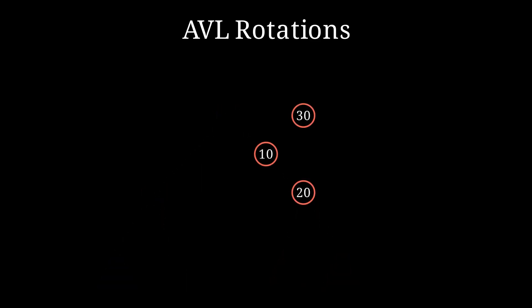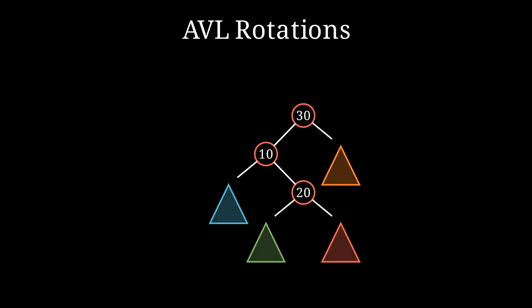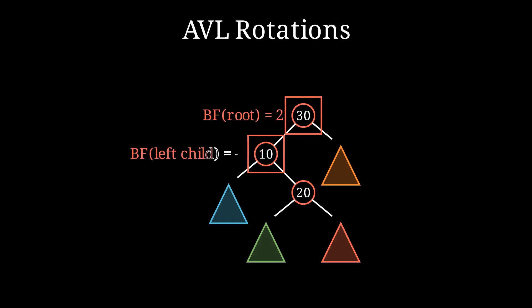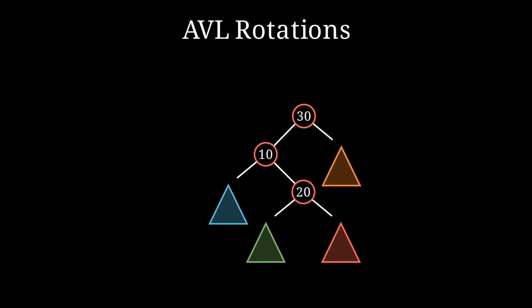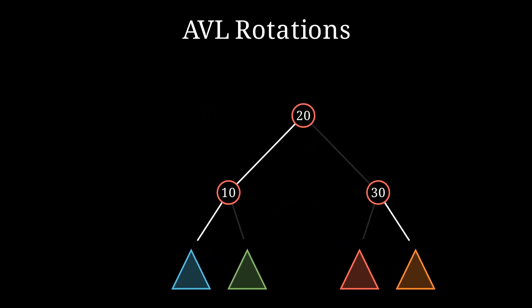The fourth type of rotation is a left-right rotation. It is used when the tree configuration is as shown. Here, the root has balance factor 2, and the balance factor of the left child is negative 1, which triggers a left-right rotation. We rotate such that node 20 is brought up to be the new root — node 30 becomes its right child, and node 10 becomes its left child. The pointers to the subtrees are updated, and after the rotation the heights and balance factors are all within the acceptable range again.